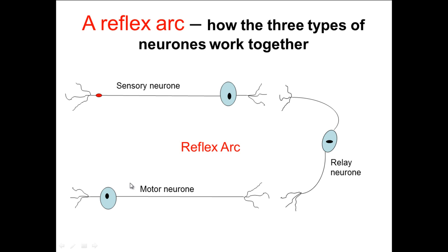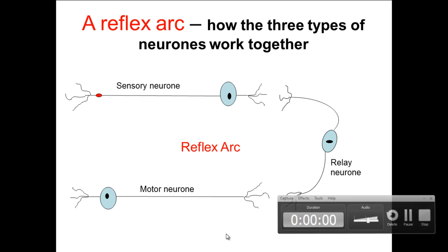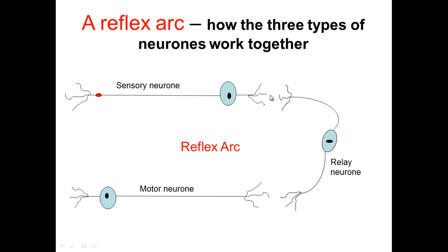The temperature receptors in your hand would then generate an impulse in the sensory neuron, and that would send that impulse along the sensory neuron through the cell body and along the dendrites. You have this section here which is a gap between the sensory neuron and the relay neuron, and that is known as the synapse.